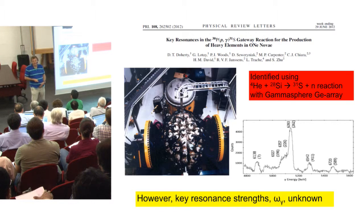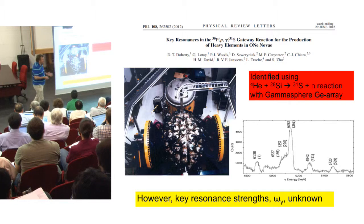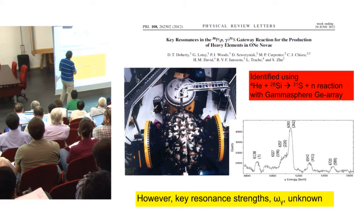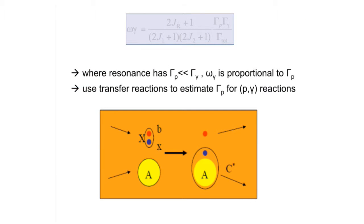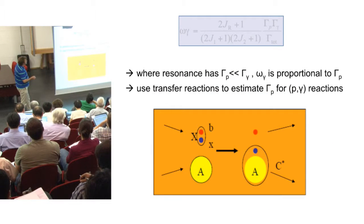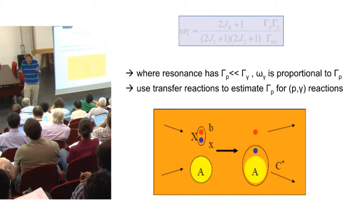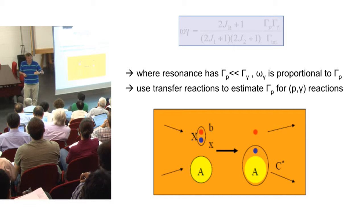So that's the definition of a resonant strength: there's a spin factor of the compound nucleus and the channel spins — a statistical factor. But the important thing are these partial widths. For these resonances, the total width is the sum of the proton width and the gamma width. It's counterintuitive because if one of the widths dominates in the total width, the thing that determines the resonant strength is the smaller width. In this case, when we're dealing with states only just above the threshold, it's actually the proton width that's the smallest.